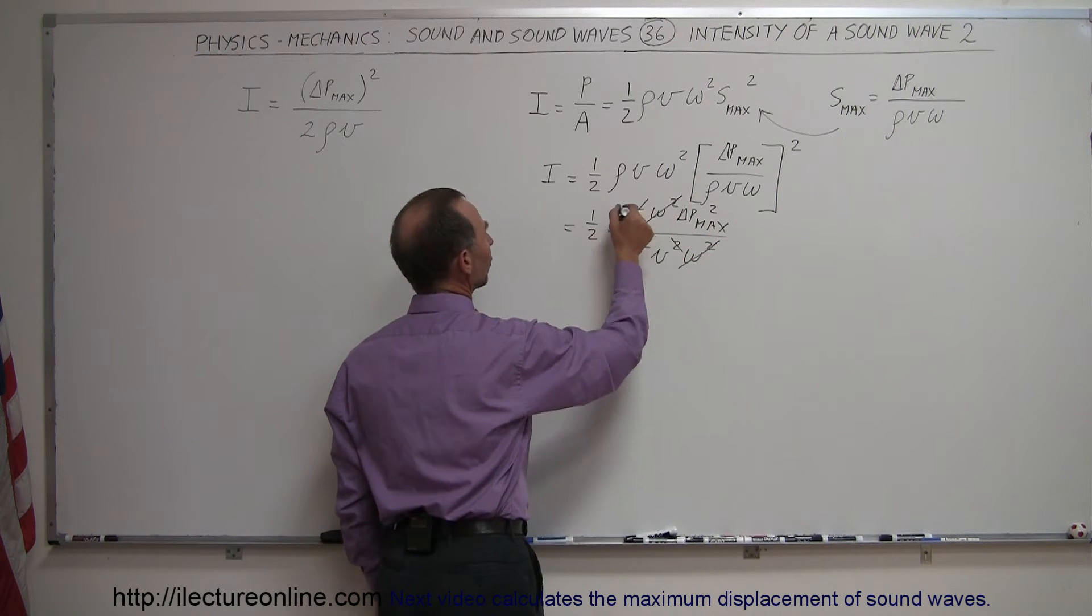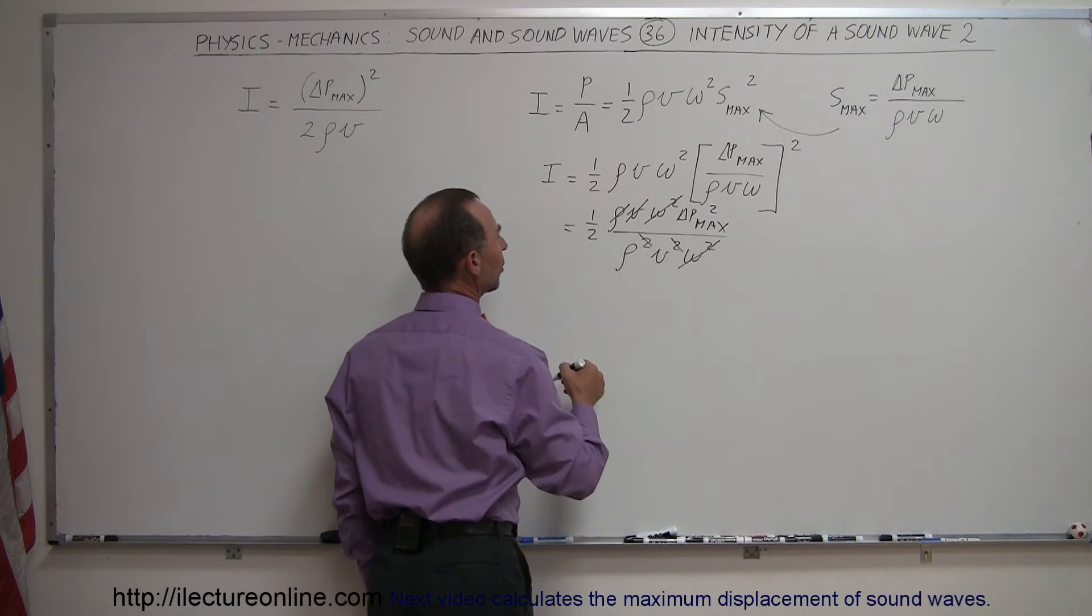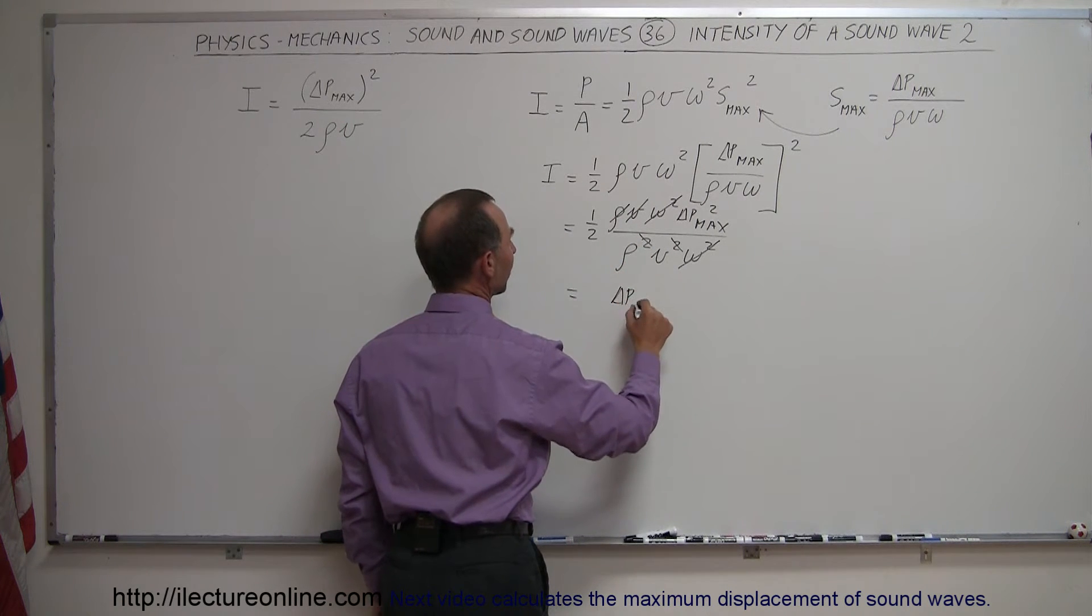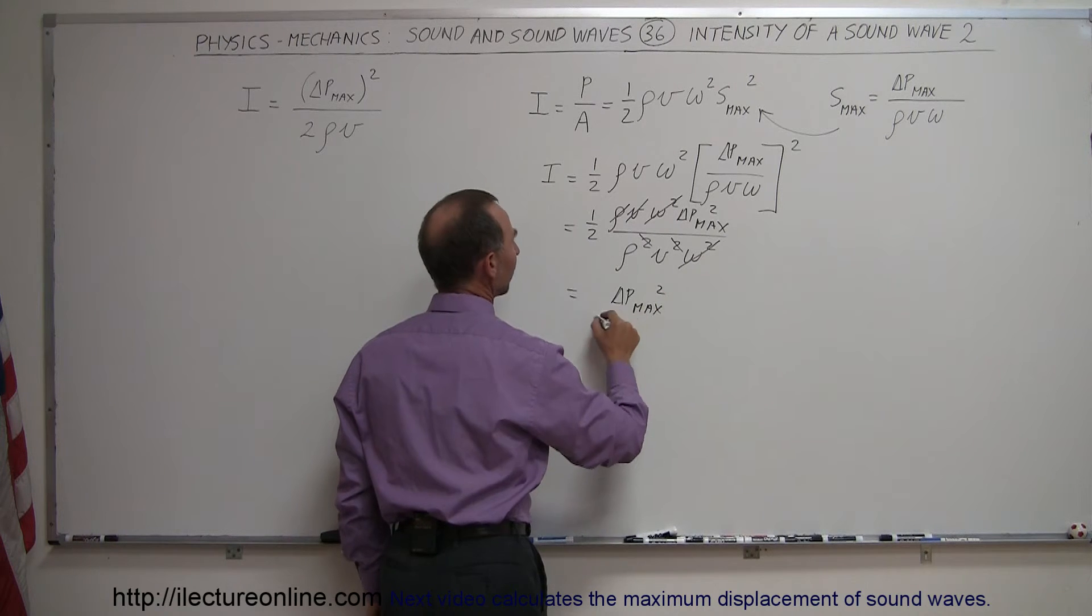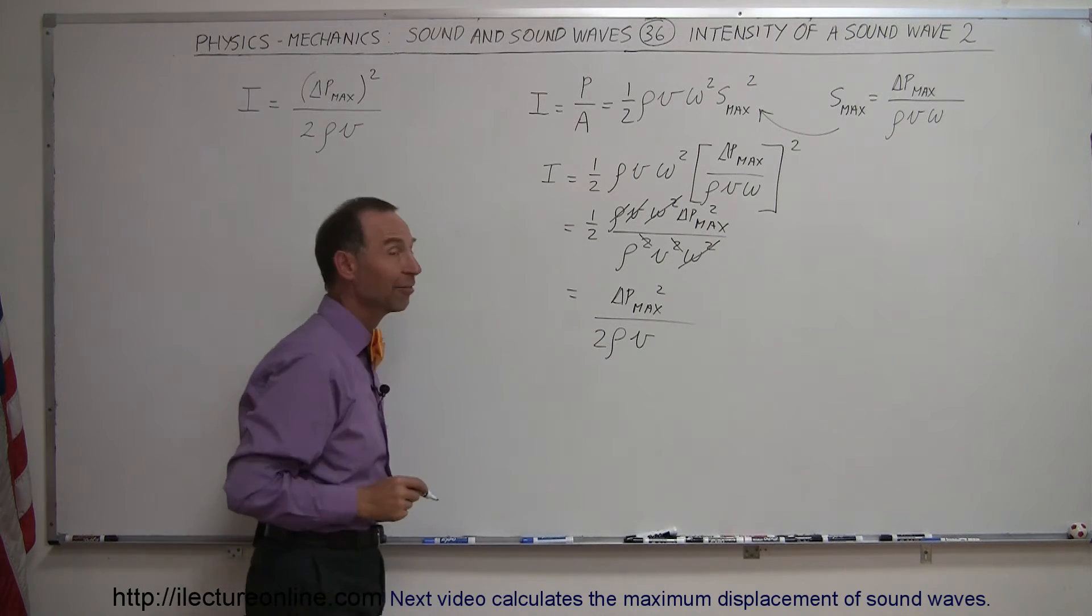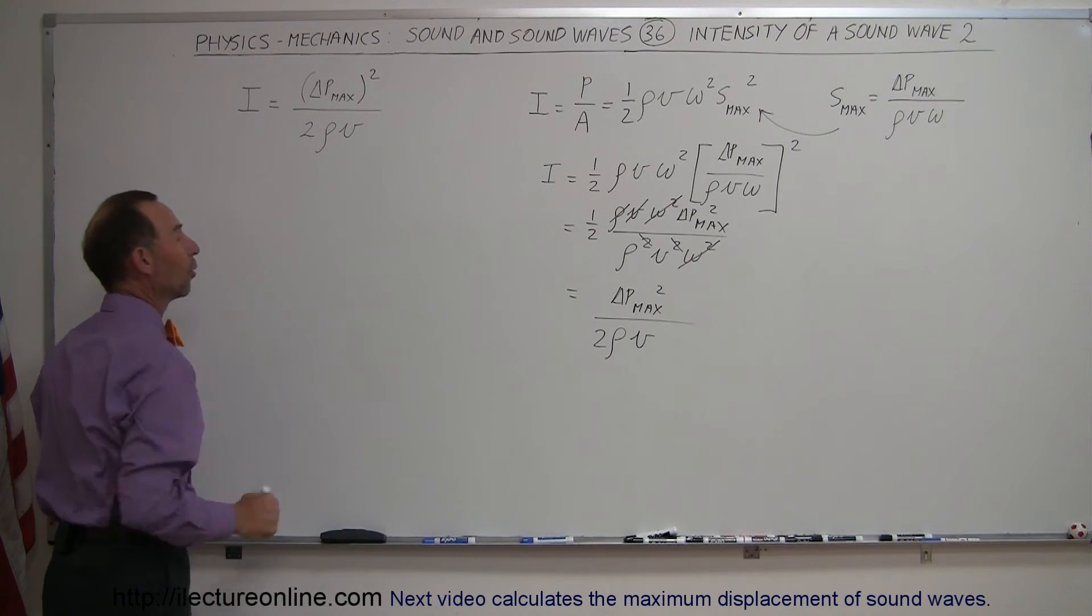This velocity cancels out one of those, this density cancels out one of those, and so this becomes the pressure difference maximum squared divided by the density, velocity, and of course don't forget the two from the one-half, and this is the equation over here.